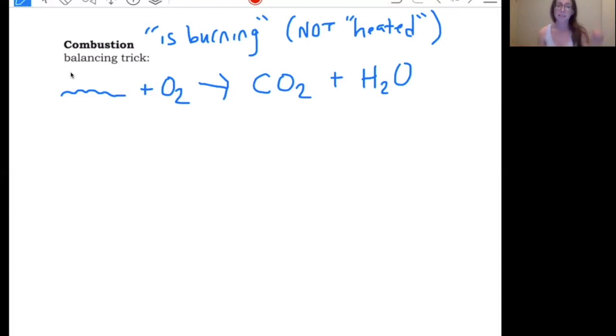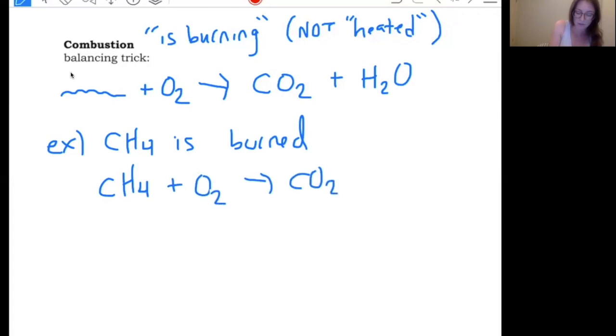So all of our reactions fall this exact same format. I could say CH4 is burned or C5H12 is burned. Any combinations of C's and H's, maybe some O's in there also, if they're burnt, add O2, yield CO2 and H2O and that's it. So for instance, we'll do one CH4 is burned. We take CH4 because it says is burned. We add O2 and we know that we make CO2 and H2O. No charges, no crisscrossing, nothing, just always that.